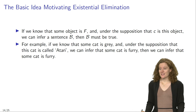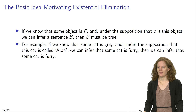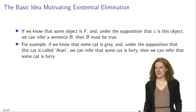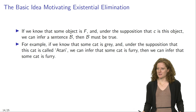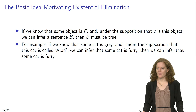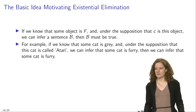Existential elimination is presumably our most complicated and most difficult to understand quantifier rule. The basic idea motivating existential elimination is this: if we know that some object is F, and under the supposition that C is this object we can infer a sentence B, then B must be true. For example, if we know that some cat is grey and under the supposition that this cat is called Atari we can infer that some cat is furry, then we can infer that some cat is furry.